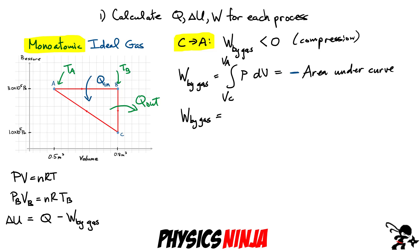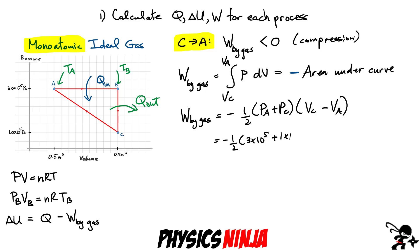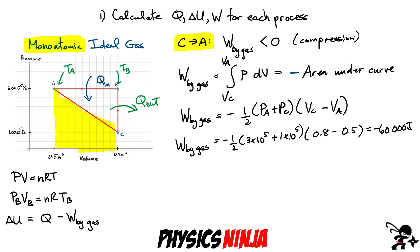The area of the trapezoid is (1/2)(P_A + P_C)(V_C − V_A). Since this is a compression, we put a negative sign in front. Substituting: −(1/2)(3×10⁵ + 1×10⁵)(0.8 − 0.5) = −60,000 joules. You can also break it into a triangle plus a rectangle underneath and get the same value.